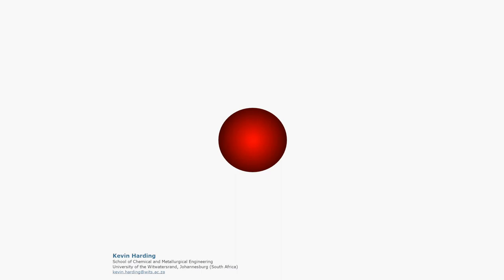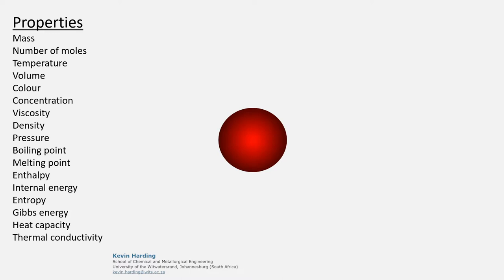Given an amount of substance, several properties can be determined. These include mass, number of moles, temperature, volume, colour, concentration, viscosity, pressure, and various properties relating to energies.